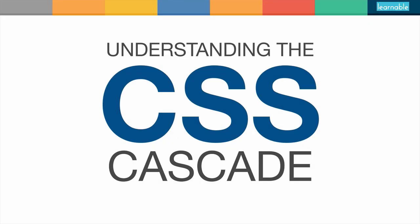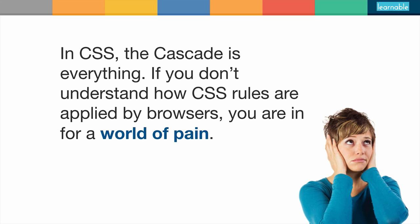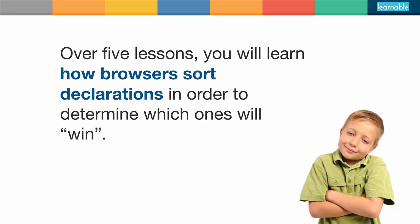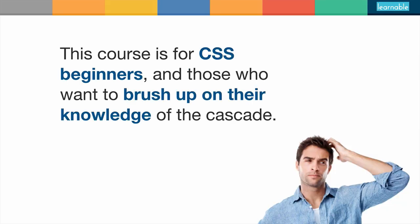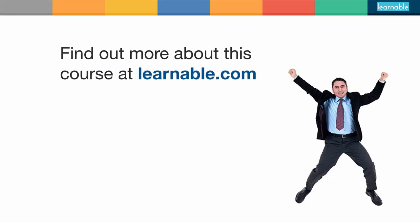Now if you found that useful, you might be interested in a new course of mine called Understanding the CSS Cascade. In CSS the cascade is everything — if you don't understand how CSS rules are applied by browsers, you're in for a world of pain. Over five lessons you're going to learn how browsers sort declarations in order to determine which ones will win. The course includes a series of hands-on exercises on all aspects of the cascade, from user stylesheets to important rules to specificity and more. This course is for CSS beginners, but also for those who want to brush up on their knowledge of the cascade. Hope to see you there.